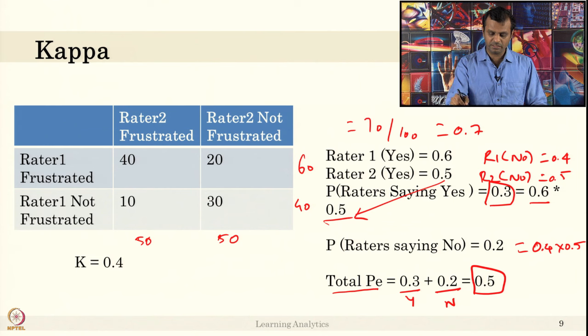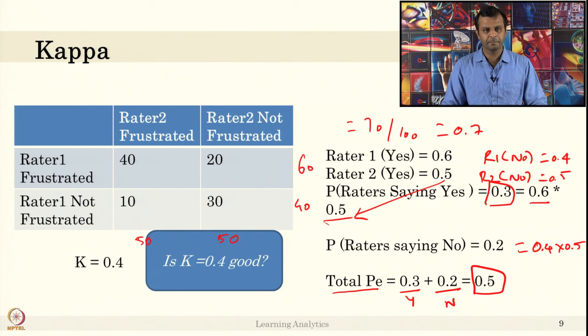If you use the 0.7 value in the formula, you get the kappa score equal to 0.4. You can compute that. Please apply that in the formula we gave in the previous slide and do that. Is K equal to 0.4 good is the question. Think about it. If you want, you can pause and go and search on internet and see if kappa score 0.4 is good.